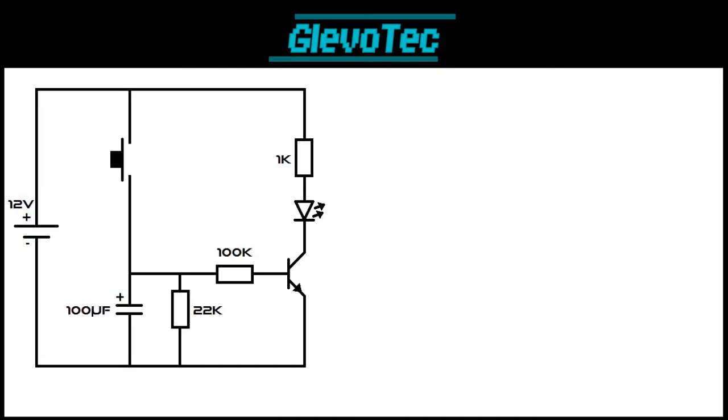This circuit can be used in many ways for different purposes. The specific time is determined by the combination of the capacitor and resistor.